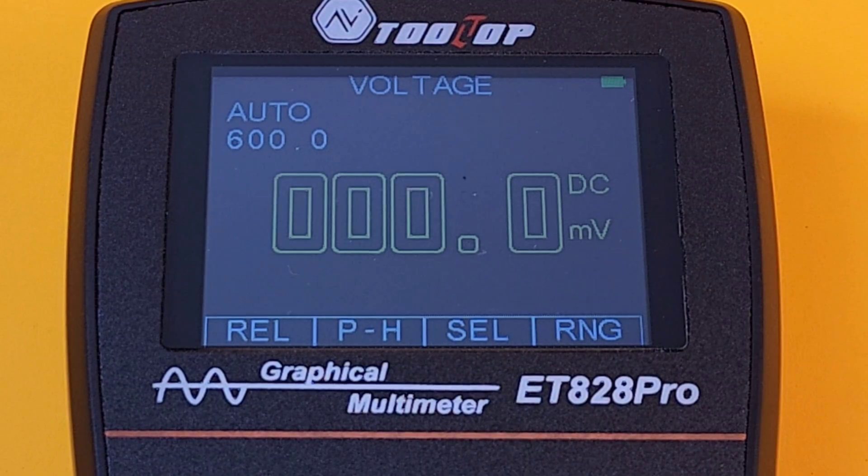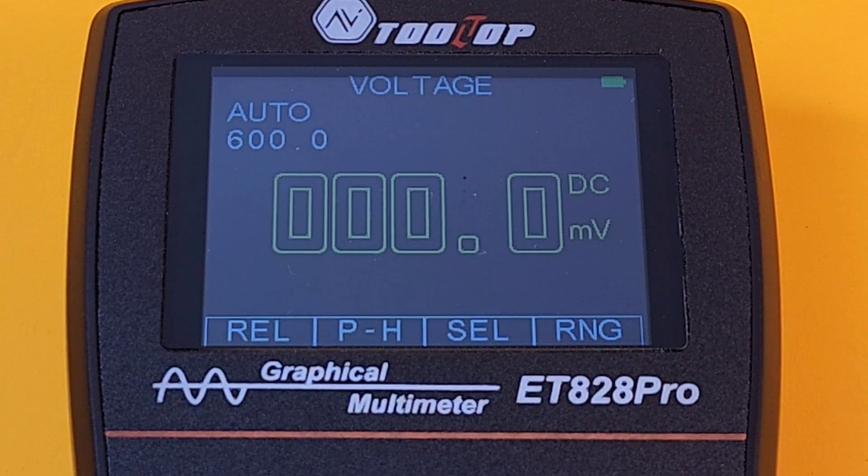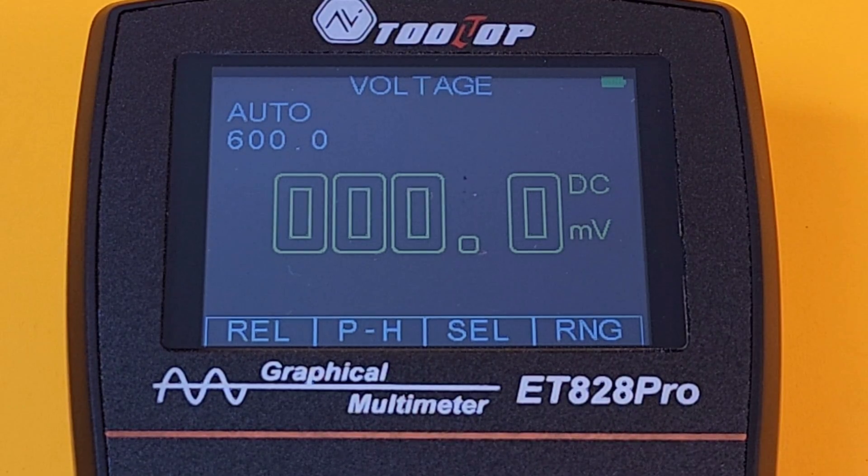One thing that really stands out on the 828 Pro is that gorgeous color display. That is one good looking screen. I don't know. Blocky, chunky fonts perhaps. But man, it just works for me. It looks uber cool. Kind of a Tron thing going on. I don't know, but I really like it.